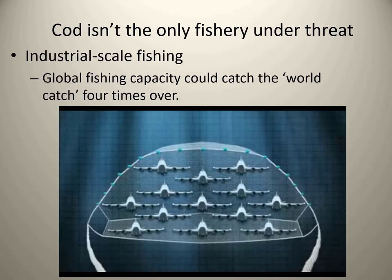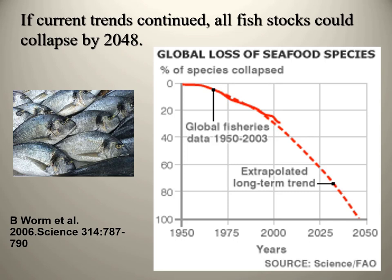The world's long-line industry sets 1.4 billion hooks every year — enough line to encircle the globe more than 550 times. If current trends continue, all fish stocks could actually collapse by mid-century, by 2048. In 1997, about 79% of the world's commercially important fish species were either fully fished, overexploited, depleted, or slowly recovering. By 2018, experts agree about 90% of global fisheries are already fully exploited, with some estimates as high as 99%.